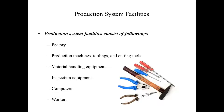The production system facilities consist of the following sections: the factory, the production machines, toolings and cutting tools, material handling equipment, inspection equipment, computers, and the workers. All these are parts of the production system facilities.